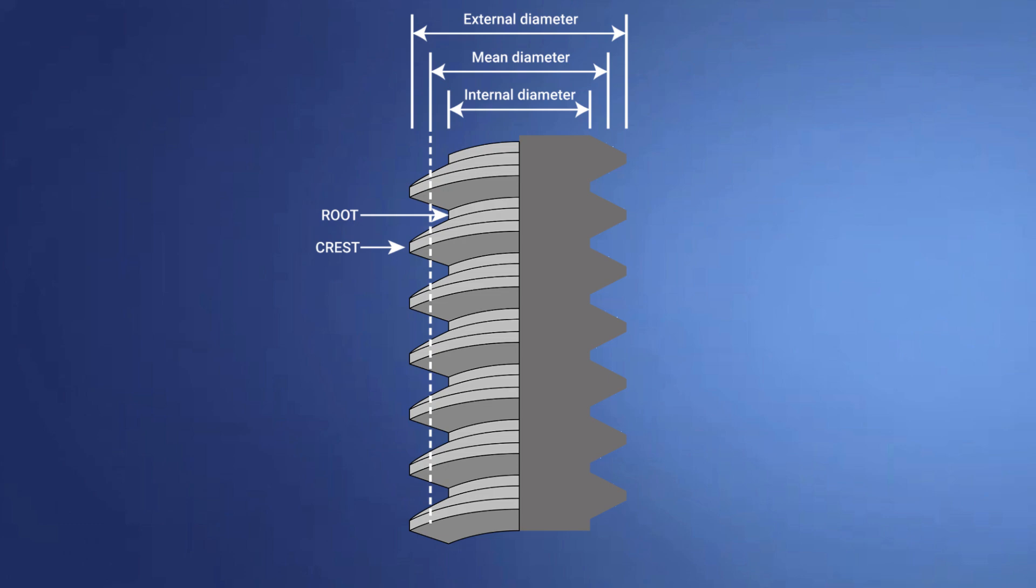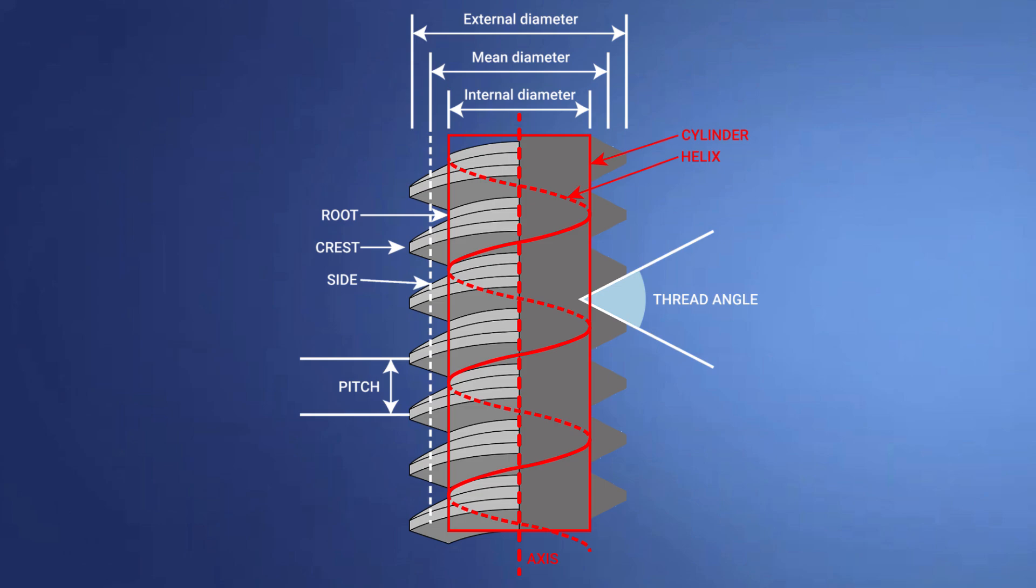We can notice that this type of screw is a helical structure, used to convert between rotational and linear movement or force. This is the pitch of the helix while this is the tilt angle of the helix.